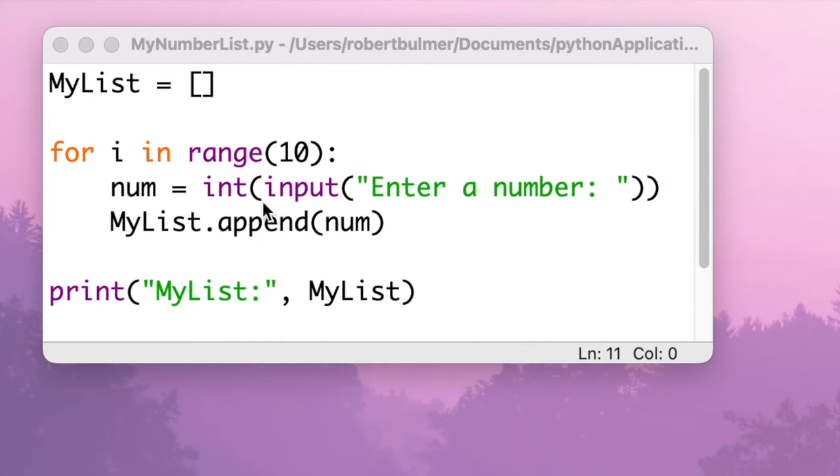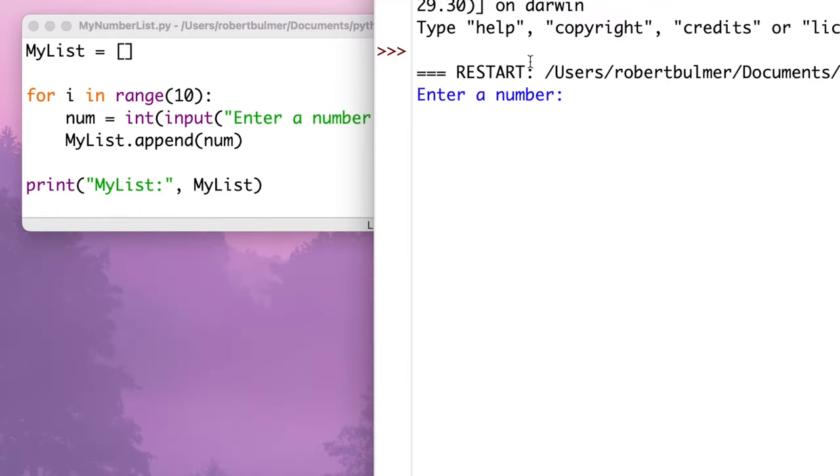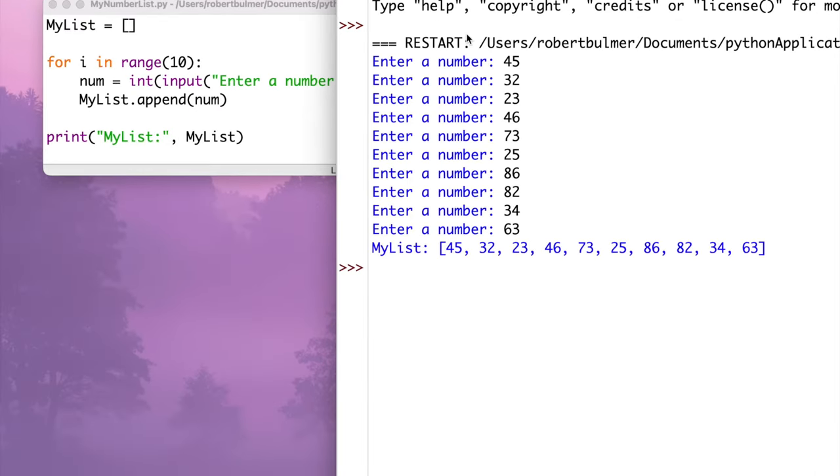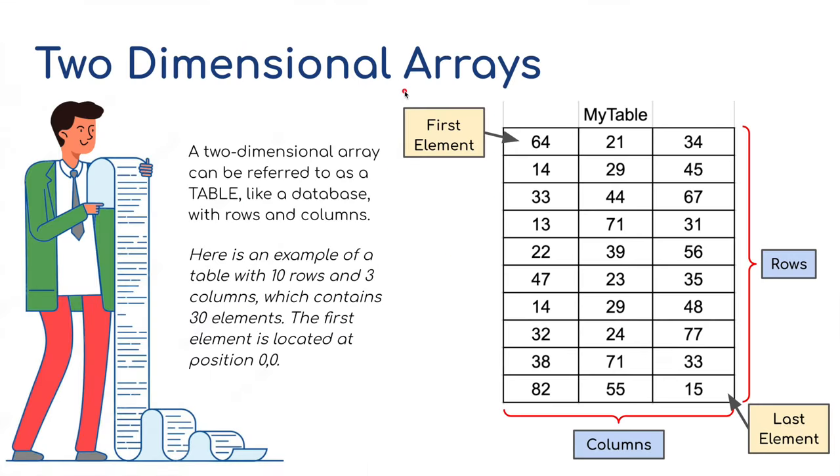So I've opened Python, so here's the program. If I run this now, it's going to ask me to input 10 numbers. So I'll do this quickly. And then it will print out, at the end, my list, as you can see here, my list with all the numbers inside the list.